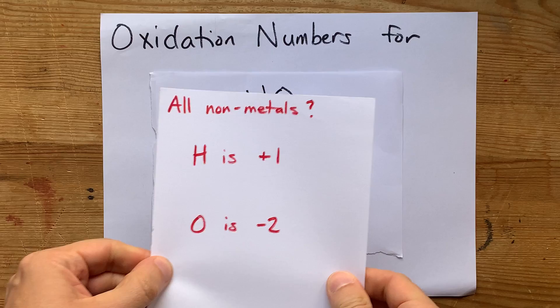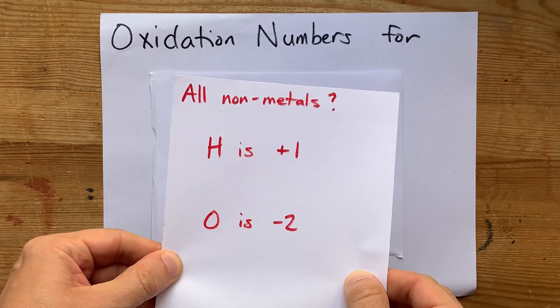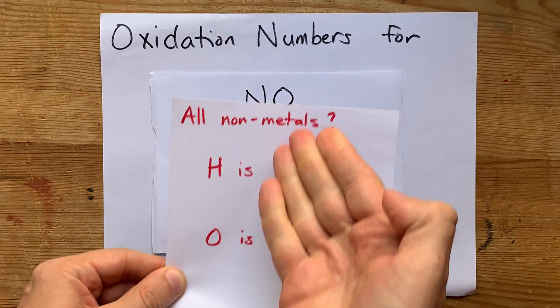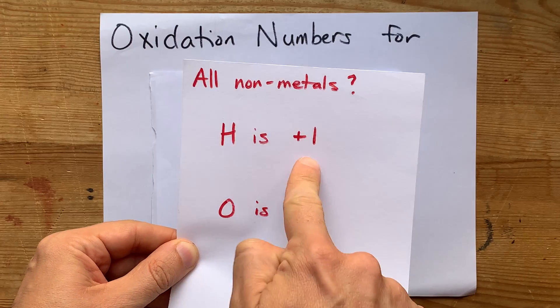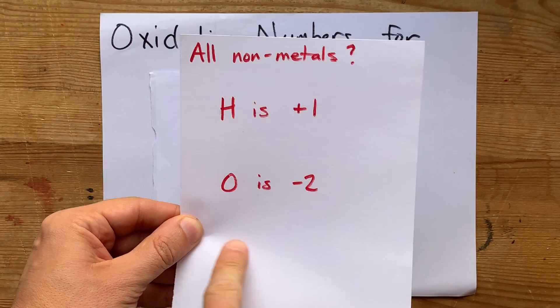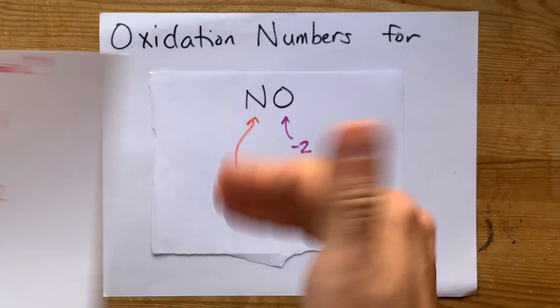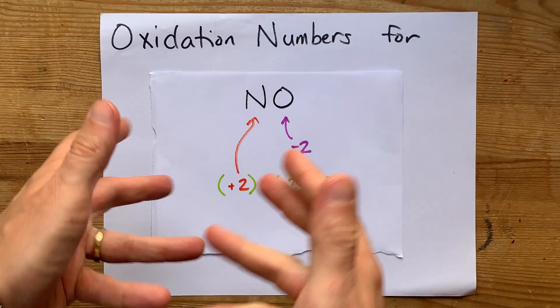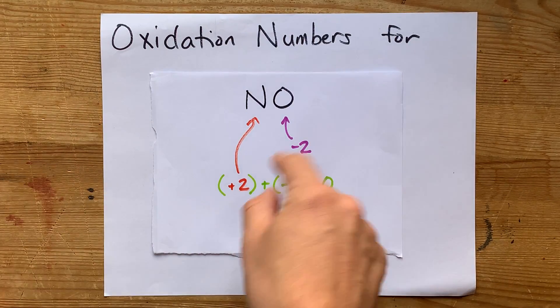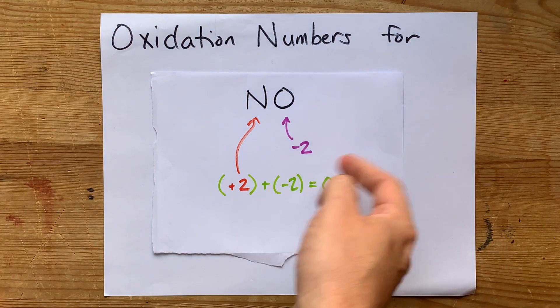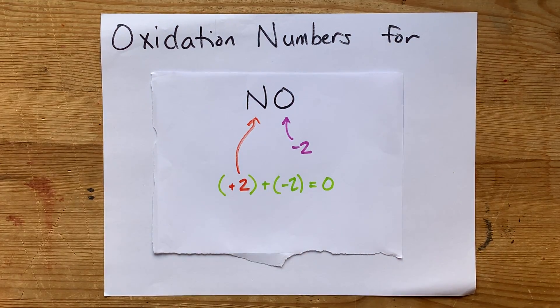Just remember, this is your order of priority for rules if the particle you have is all non-metals. Hydrogen gets an oxidation number of plus one, oxygen is minus two, and everything else basically conforms to whatever it needs to, so that the sum of the oxidation numbers add up to the total charge on the particle.